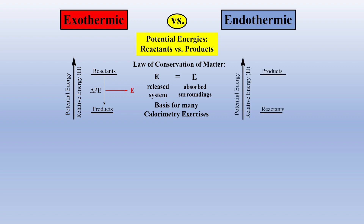For an endothermic reaction, the average potential energy of products is higher than reactants. Thus, as reactants form products, energy is absorbed from the surroundings to the system or reaction.